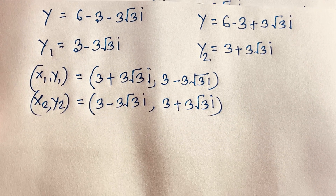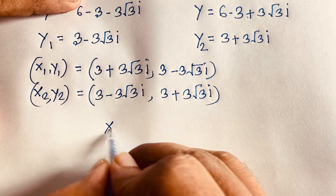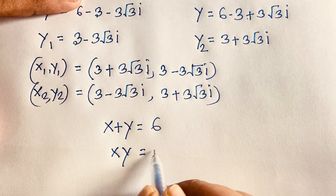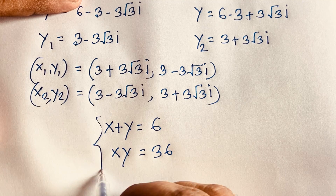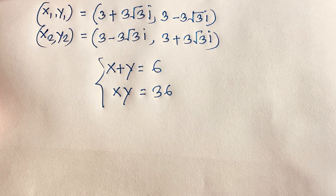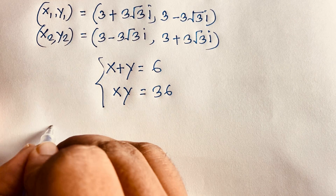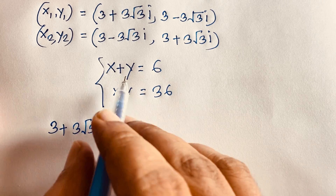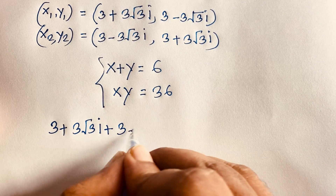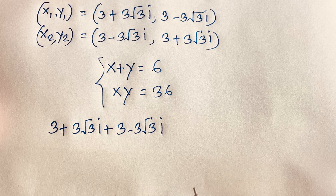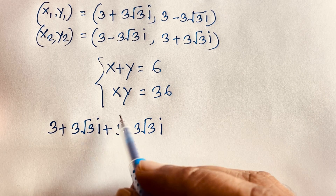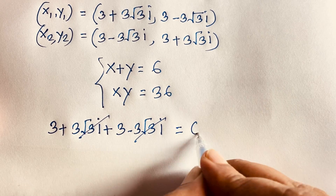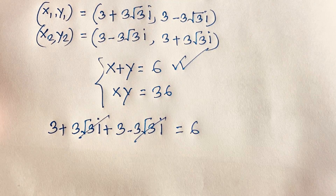Let's check out. Our question is x plus y equals 6 and xy equals 36. For the first condition: x plus y equals (3 + 3√3 i) plus (3 − 3√3 i). The imaginary terms cancel, and 3 plus 3 gives 6. So x plus y equals 6 is verified — this is right.